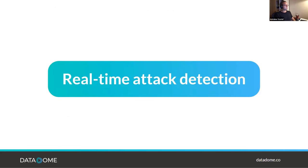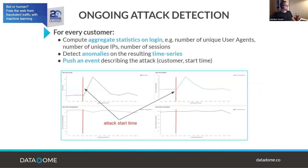To detect ongoing attacks in real time, for every customer we monitor aggregate statistics on the login endpoint — for example, the distinct number of user agents, IP addresses, and countries making requests. We apply outlier detection on these time series in a streaming detection engine. When an anomaly is detected, we push an event describing the attack, recording that for a given customer at a given time a given attribute started varying abnormally.